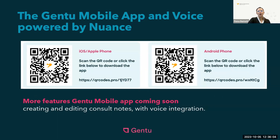The Gen 2 mobile app is now available and can be downloaded from the Play or App Stores. As well as the voice dictation advantage, the app allows practitioners to view appointments, procedures and patient records, meaning the information is available to them whenever they need. You can scan the QR codes on the screen to be taken directly to your store of choice to download the Gen 2 mobile app.